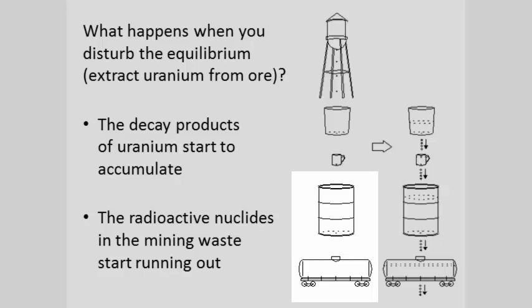The barrel and railroad tanker, because they take so long to fill up, delay secular equilibrium from being reached for a very long time. They also keep radioactive decay running in the mining waste for a very long time.